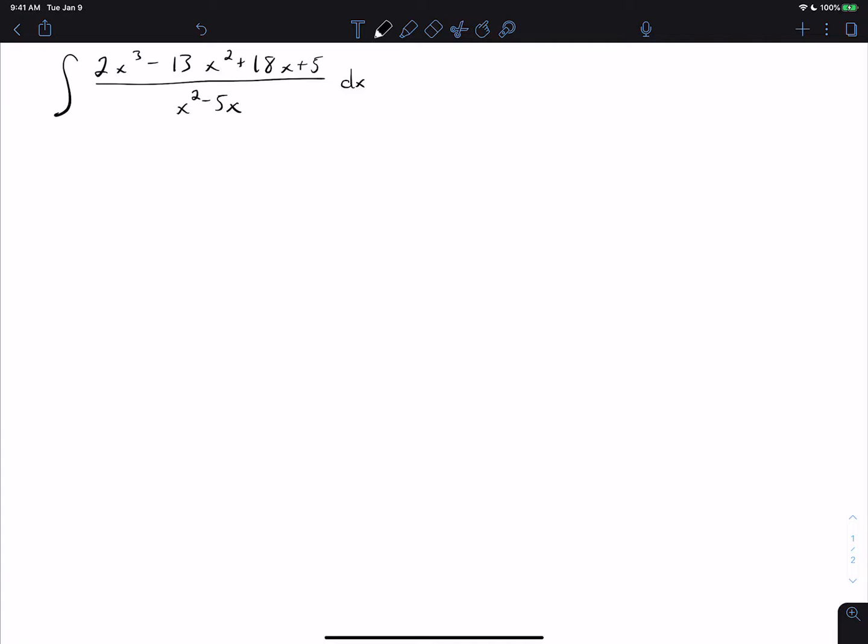On the last video we talked about two conditions for partial fractions decomposition to work. One is that the denominator needs to be factorable, which it is here. The other is that the degree of the numerator needs to be strictly less than the degree of the denominator. That's not the case here.